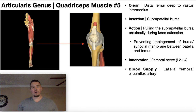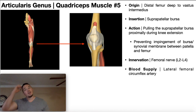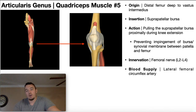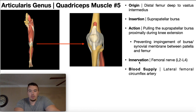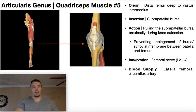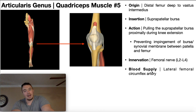So that's the function of articularis genus. Without it or if it were damaged and nonfunctional, you would likely develop suprapatellar bursitis over time because the bursa would be crammed underneath the patella in the closed-packed position. The innervation of this muscle is the same as the rest of the quadriceps — the femoral nerve, with roots L2 through L4 of the lumbar plexus. Its blood supply is via the lateral femoral circumflex artery.